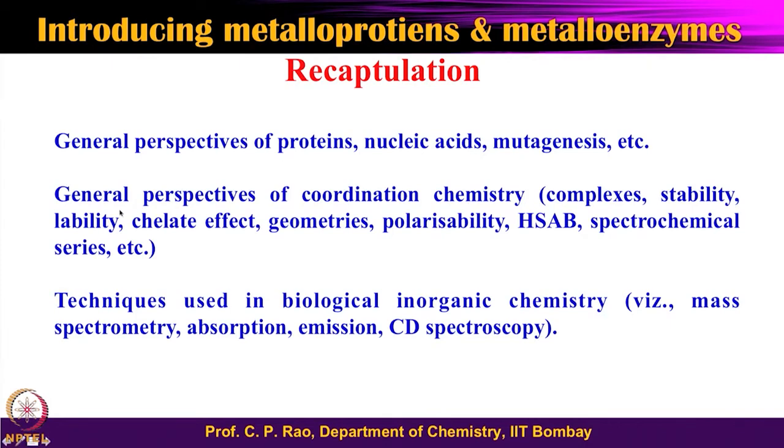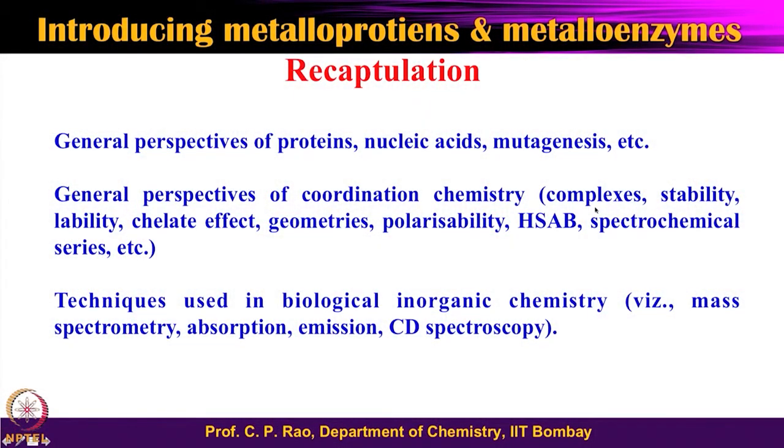Then I also tried to explain certain basic aspects of coordination chemistry, because this is biological inorganic chemistry — inorganic chemistry in the presence of biological systems. One needs to look at how inorganic ions bind, interact, and coordinate with biological systems. I covered what a complex is, how it is formed, stability, complexation stability, the chelate effect, geometries, polarizability, hard-soft acid-base concepts, and the spectrochemical series. Books I recommended can help refresh your 12th standard or first-year BSc coordination chemistry if needed.